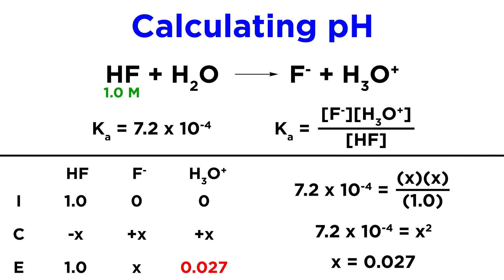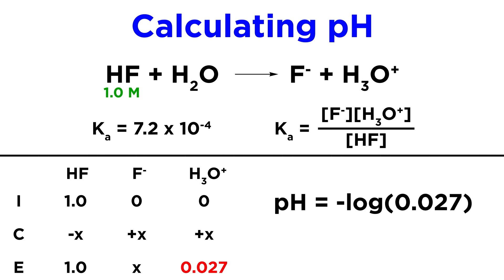As we can see from the way we constructed the icebox, this is equal to the hydronium concentration. So we can just take the negative log of this value, and we get 1.57 as the pH of the solution.